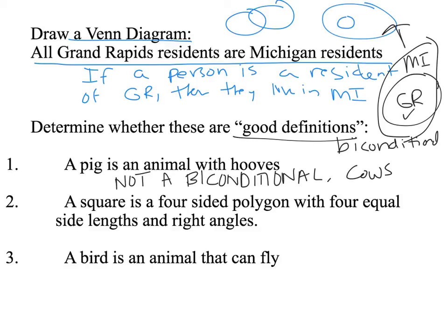Second: a square is a four-sided polygon with four equal side lengths and right angles. Testing the biconditional — if the polygon is a square, then it has four sides, four equal side lengths, and four right angles — that's true. Reversing: if the polygon has four equal side lengths and four right angles, then it is a square — that's also true. Since we can flip them back and forth, it's a good definition and can be written as a biconditional.